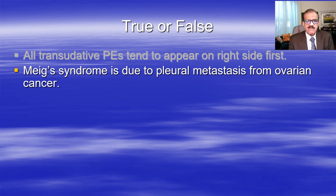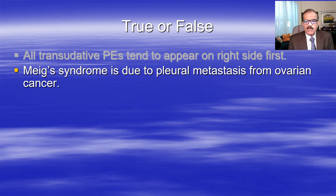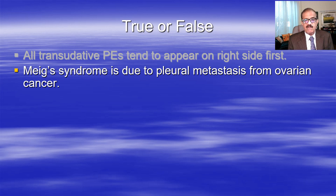Meigs syndrome is due to pleural metastasis from ovarian cancer - this is a false statement. Meigs syndrome is actually when someone has an ovarian tumor which is benign, but it may be associated with a transudative effusion on the right side. Nobody knows the exact mechanism, but this combination is called Meigs syndrome and it is non-malignant.